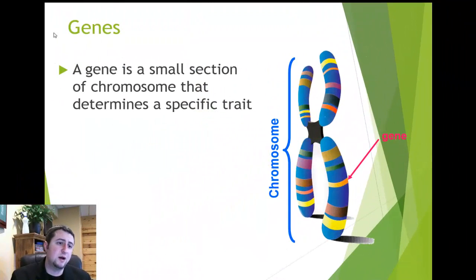Let me talk a second about genes here. A gene is a small section of a chromosome that determines a specific trait. So for example, I have brown hair. I have brown eyes. I'm pretty loud. I'm a pretty energetic guy. All of those things are traits of mine that are controlled by genes.